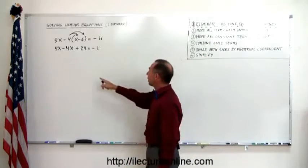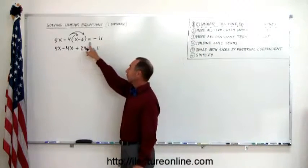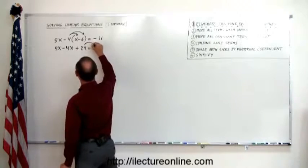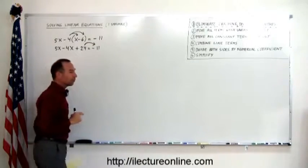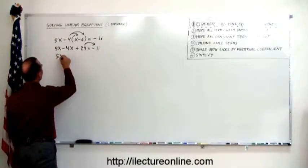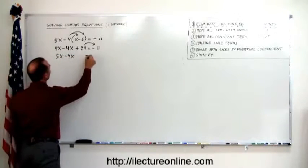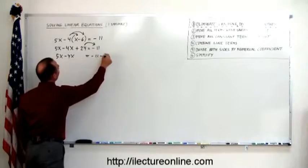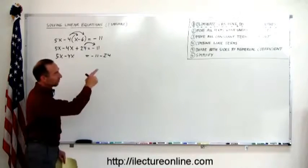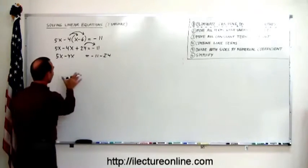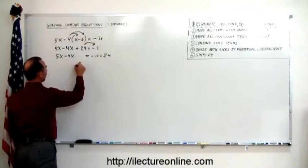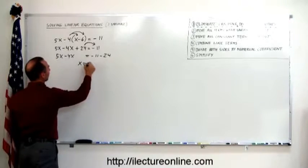Next step, move all the constant terms to the right. We have one over here, that's a positive 24, that becomes a negative 24. So we have 5x minus 4x equals minus 11 minus 24. Next step says combine like terms. 5x minus 4x is x. Minus 11 minus 24 is minus 35.